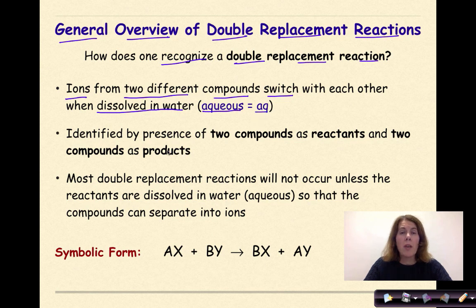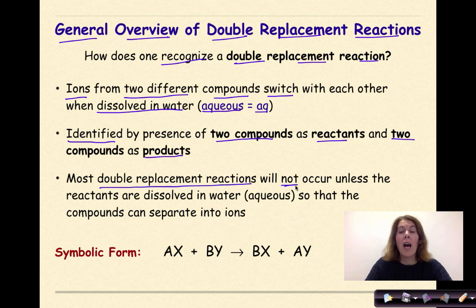Double replacement reactions are identified by the presence of two compounds as reactants and two compounds as products. Most double replacement reactions will not occur unless the reactants are dissolved in water so that the compounds can be separated into ions.